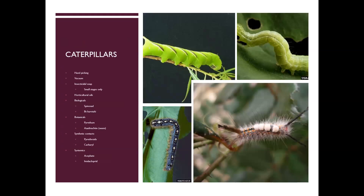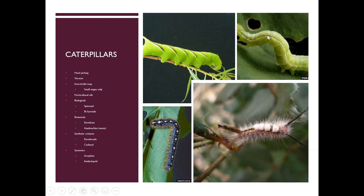Caterpillars — I want to say this is the spring for caterpillars. I have had so many questions about all different kinds of caterpillars. These ones up here are the spring canker worms — the ones that were dangling from silken strands from the oak trees, covering everything with silk and just being annoying. They have gone to the ground and pupated, and they only have one generation per year, so you don't have to worry about them until next year.